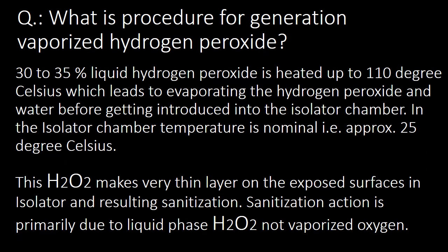The next important question: what is the procedure for generation of vaporized hydrogen peroxide? 30 to 35 percent liquid hydrogen peroxide is heated up to 110°C, which leads to evaporation of hydrogen peroxide and water before getting introduced into the isolator chamber. Inside the chamber, the temperature is nominal — approximately 25°C.